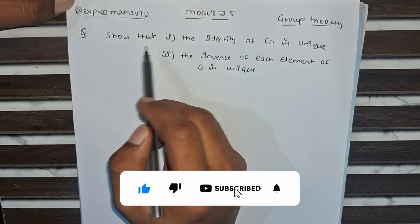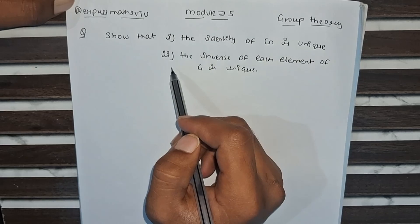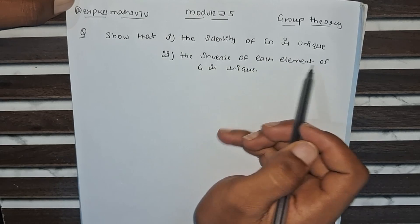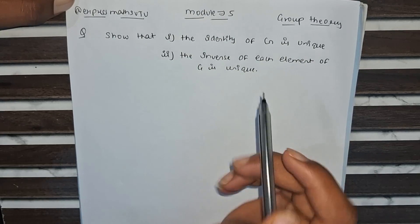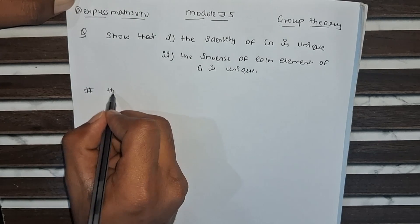The question is: show that (i) the identity of G is unique, and (ii) the inverse of each element of G is unique. Now we go for the first part, the identity of G is unique.